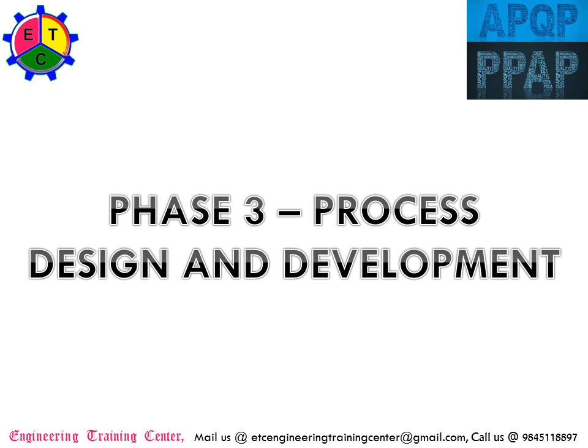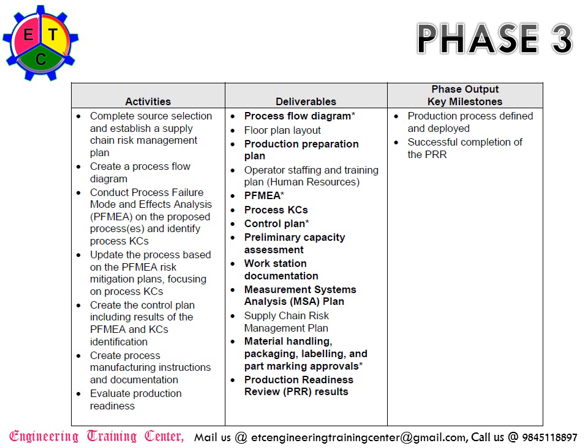Phase 3 is known as Process Design and Development. The activities in Phase 3 include: complete the source selection, establish the supply chain risk management plan, create the process flow diagram, conduct the Process Failure Mode and Effect Analysis (PFMEA) on the proposed processes, identify the process key characteristics, update the process based on the PFMEA risk mitigation plans focusing on process key characteristics, and create the control plan including results of the PFMEA and key characteristics. Also create the process manufacturing instructions documentation and evaluate the production readiness.